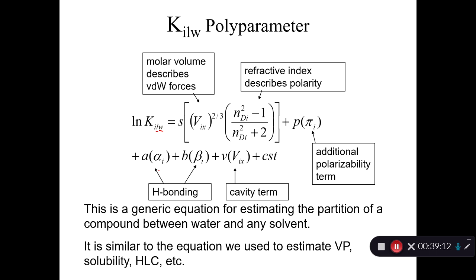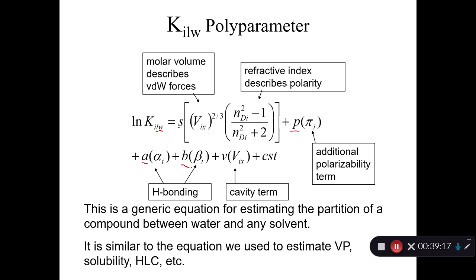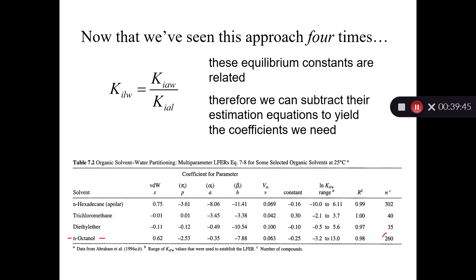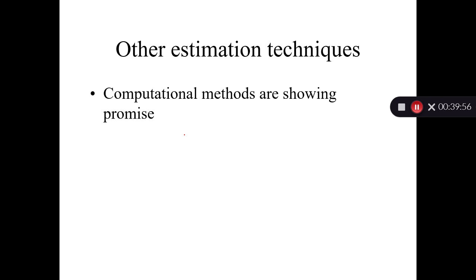Here's the polyparameter equation for liquid organic-to-water partitioning, again with S, P, A, B, and V for the molar volume term. You can calibrate that for different chemicals — octanol-water, diethyl ether-water, trichloromethane, hexadecane. The octanol-water one uses 260 chemicals to derive the equation, with an R² of 0.98. That's pretty good — it doesn't get a whole lot better. So this is a robust method of predicting octanol-water partition coefficient.